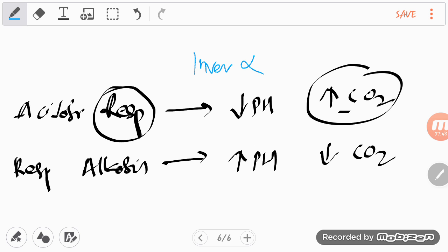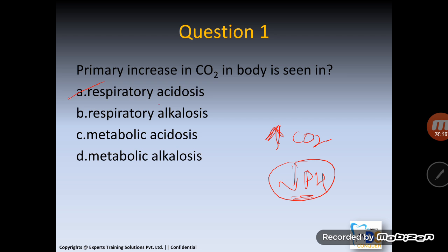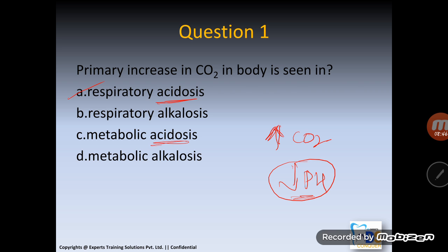MCQ 1: A primary increase in carbon dioxide in the body is seen in which condition? Since CO2 is increasing, pH decreases. CO2 is always linked to respiratory, and decreasing pH means acidosis. Therefore, the answer is respiratory acidosis.